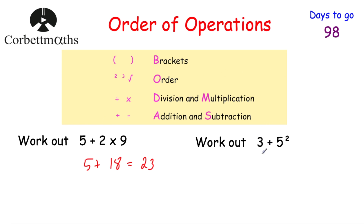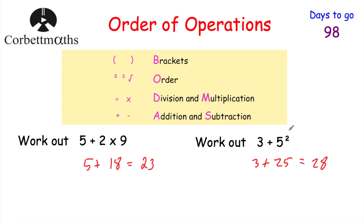The next question: work out 3 plus 5 squared. Do we have any brackets? No. Do we have any orders, like powers? Yes, we've got a squared. So we need to do 5 squared first — that means multiply by itself. 5 times 5 is 25. We write 25 beneath the 5 squared, and we still have our 3 plus in front. So we've got 3 plus 25, and 3 plus 25 is equal to 28.